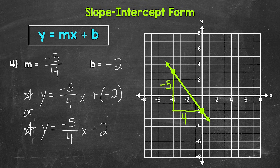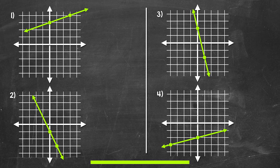Now that we've gone through some example problems together, it's time for you to try some practice problems on your own. Have paper and a pencil ready. Write the equation in slope-intercept form using each graph. I'll give you three minutes and then we will go over the answers. Feel free to press pause if you need more time, or jump ahead to the answers whenever you are ready.